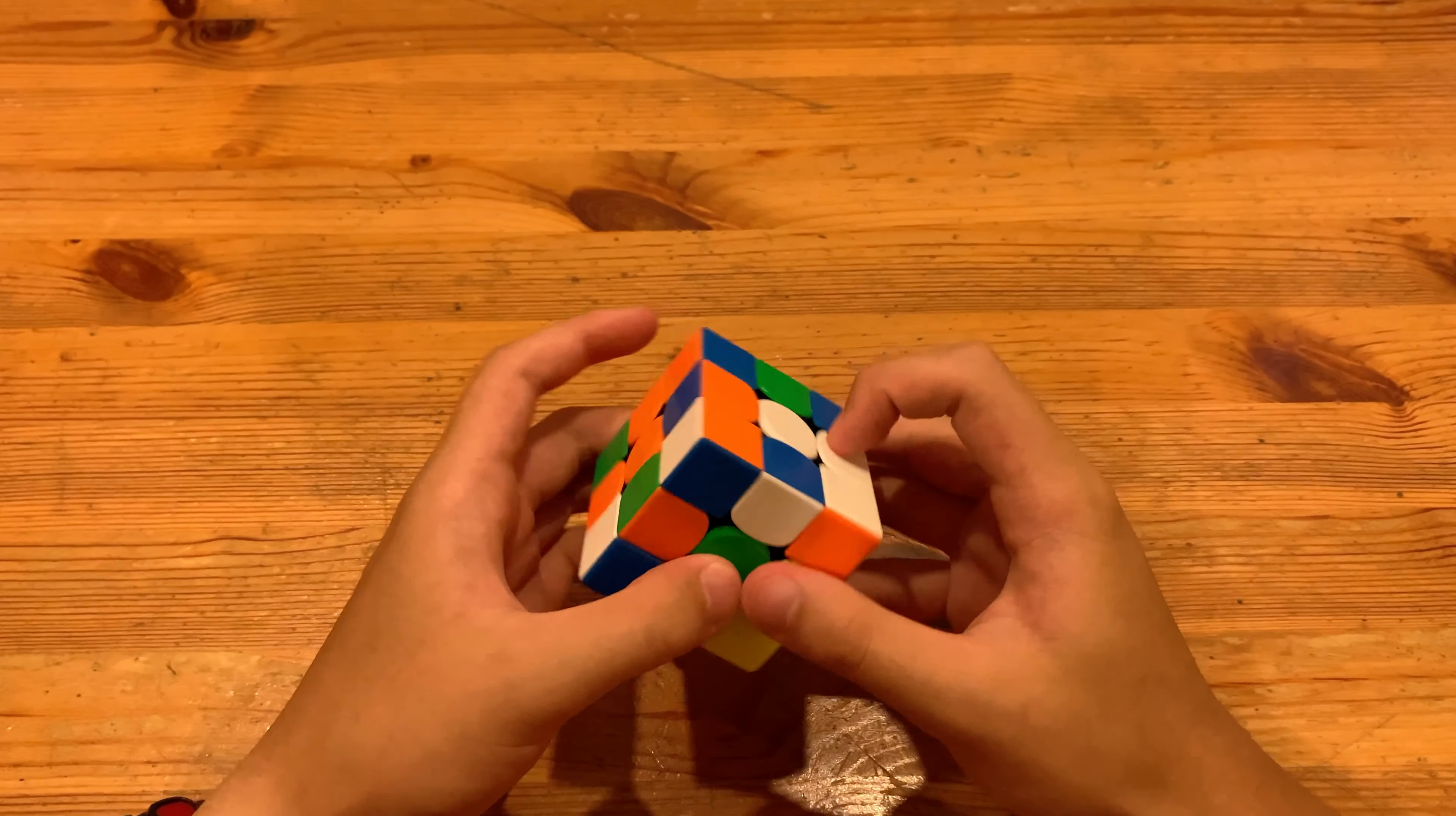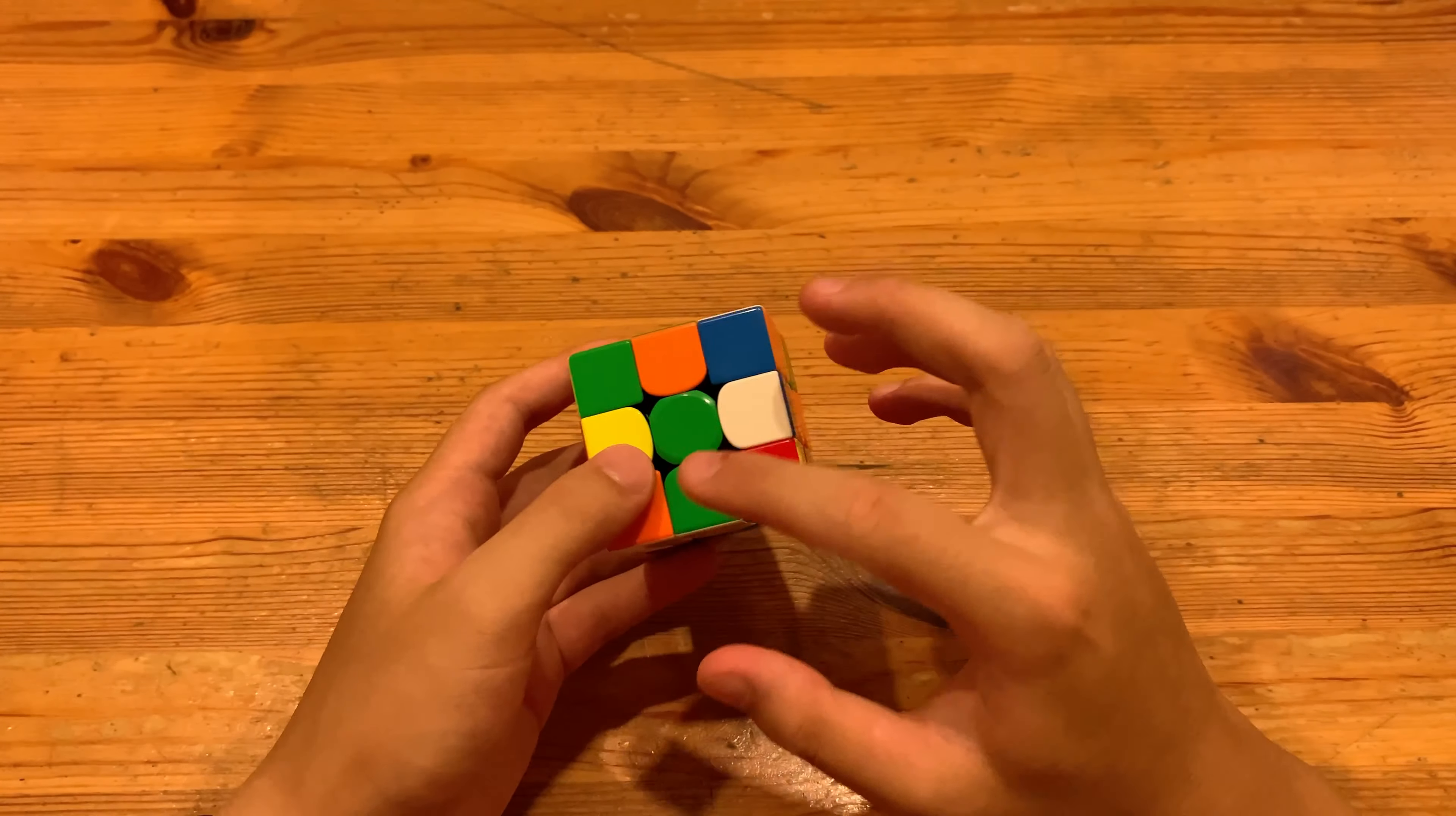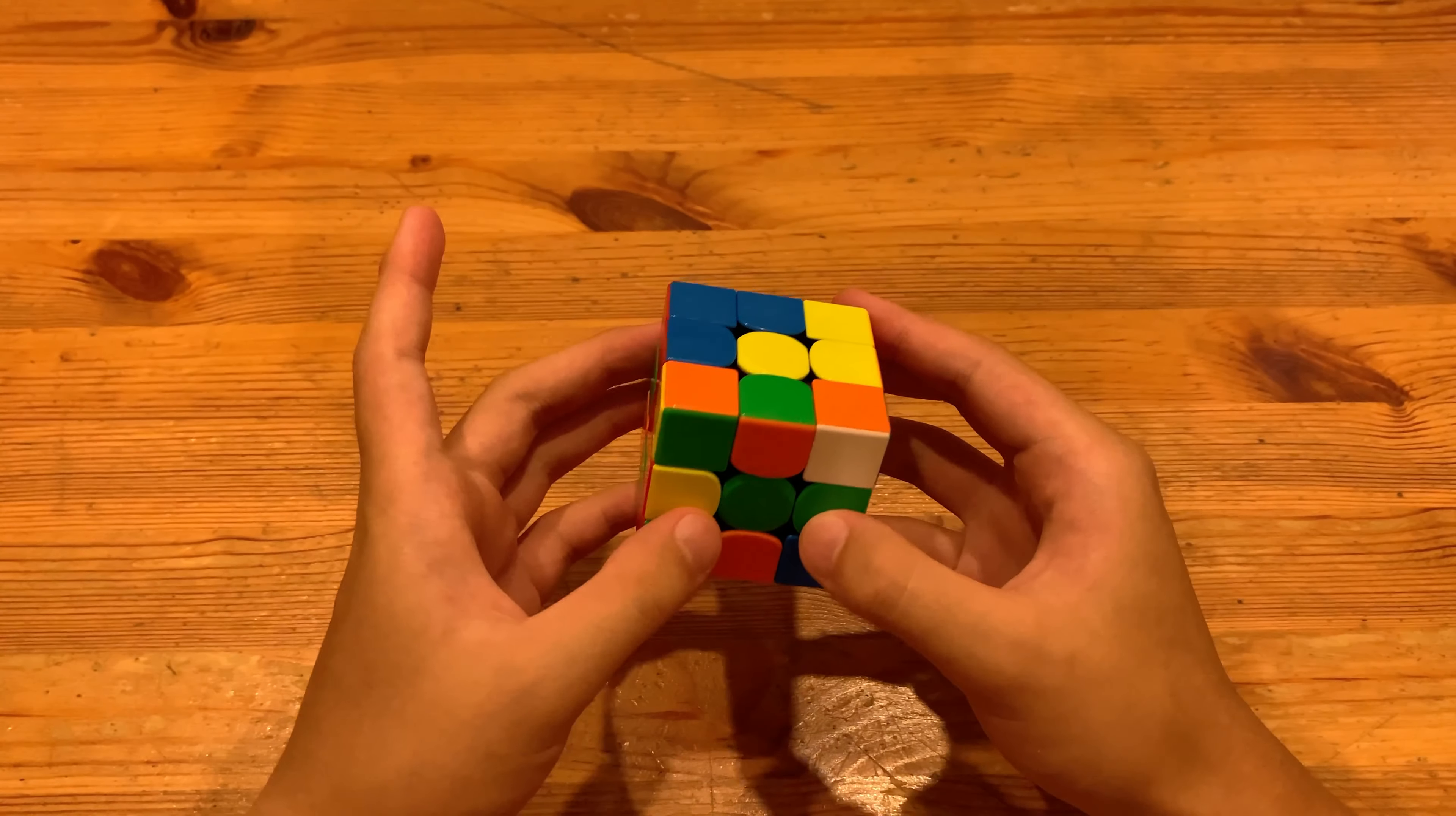So what he did here was do a Z2 and insert this cross edge into here which moved this pair over here. So wider U prime wider prime that solved this cross edge, and then here he just had to do R2 D prime and then R. And then instead of just doing a D, he did D U at the same time so you can just insert this pair.